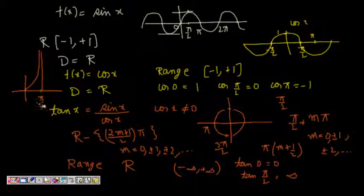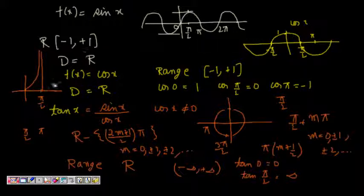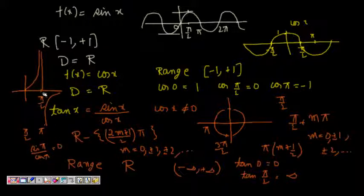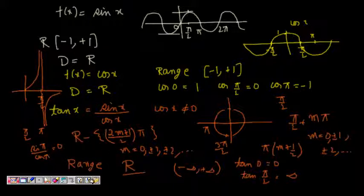From π/2 to π: sin x is positive but cos x becomes negative, so tan x goes from −∞ to 0. This confirms the range of tan x is the whole of ℝ. In the next class we will learn about the range of the inverse trigonometric functions. Thanks a lot.